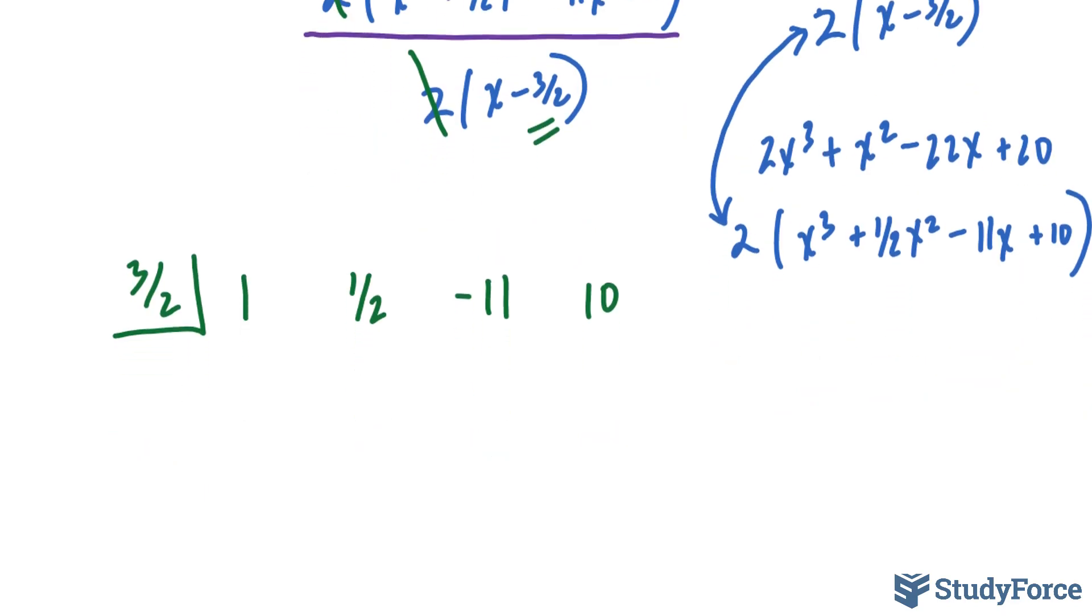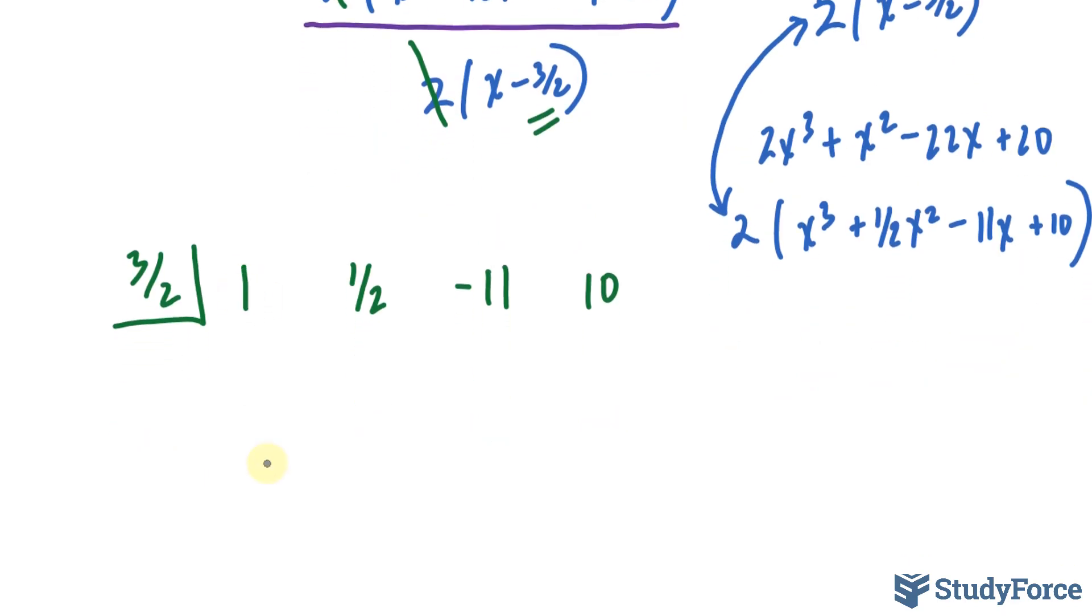Now when you synthetically divide, you will rewrite the very first number, multiply 3/2 with that number, which gives you 3/2, and you'll add this number and that number together. Remember, that's 1/2, and that's technically 1.5, so adding these, we get 2.